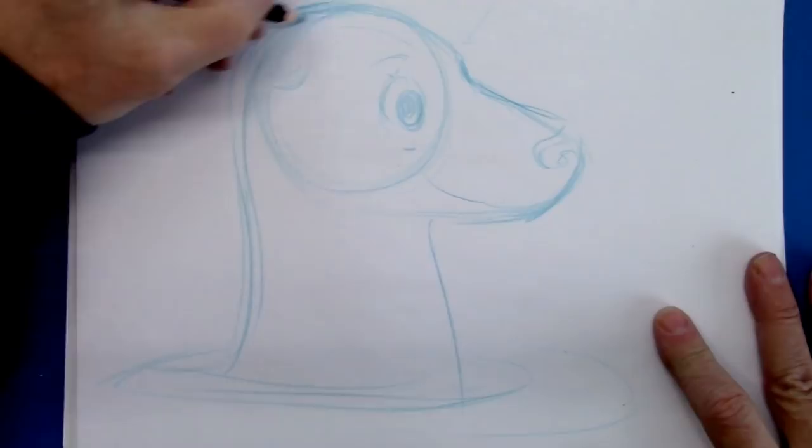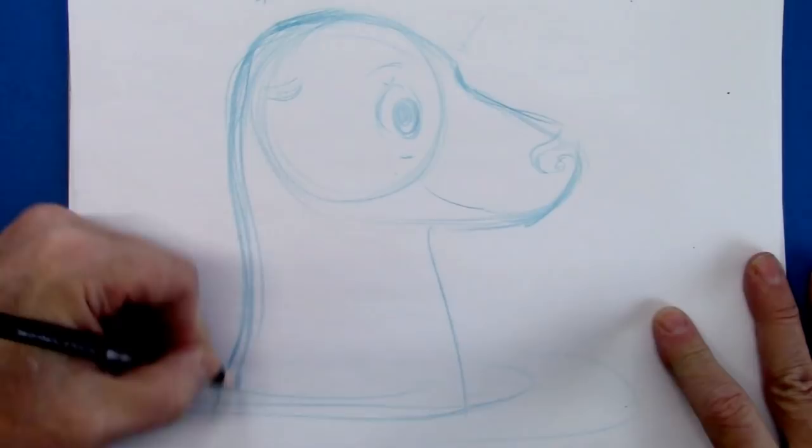Right here is the occipital protuberance. That's the part that really makes these characters cute, sort of almost a little like high crest in the head.